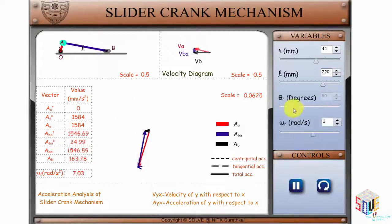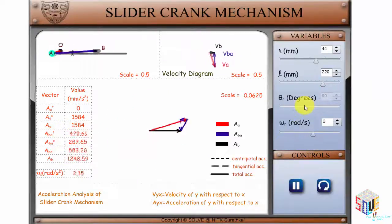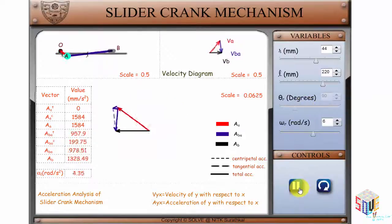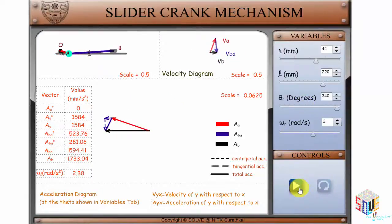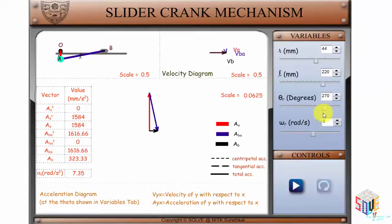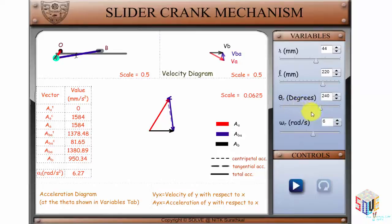If you want to change the angle to analyze various positions of the crank mechanism, pause the animation by clicking here in controls and then change the angle here. Once you set it up for the required angle theta, the corresponding acceleration diagram can be found here.